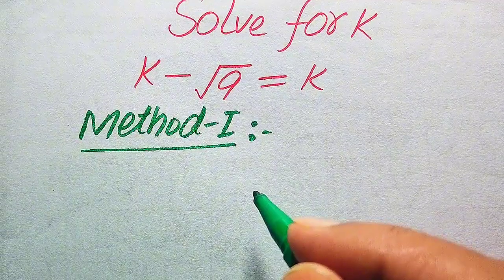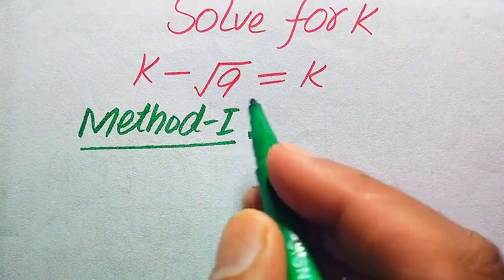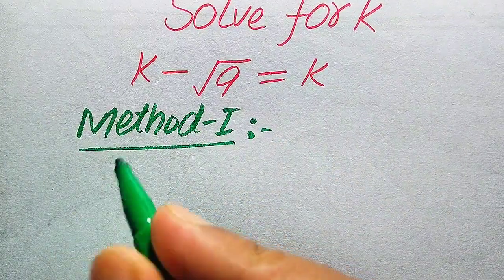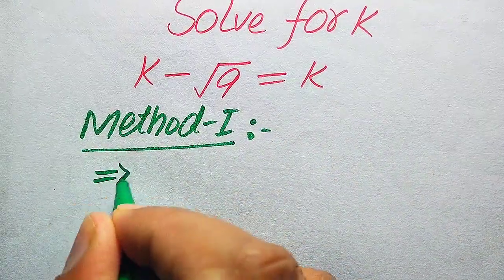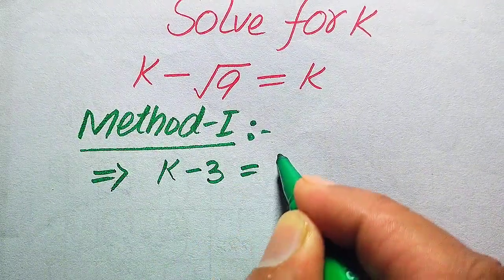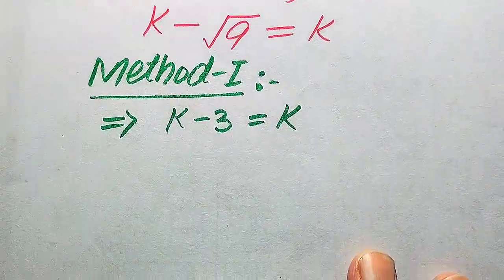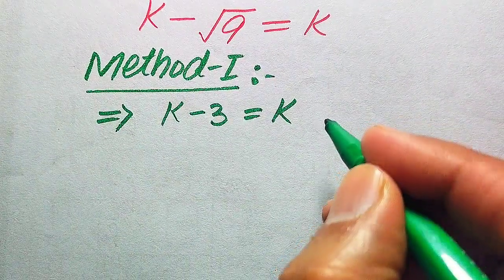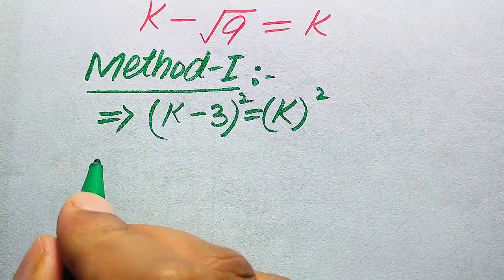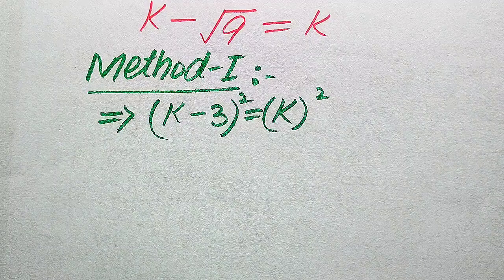Now we move towards the solution. First, focus on the radical term — this is square root of 9, and we know that square root of 9 equals 3. So the equation becomes k minus 3 equals k. In order to find the values of k, we need to take squaring on both sides, and when we apply squaring it will be written in this form. Now we use a nice algebraic formula.